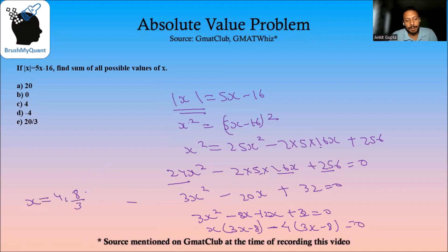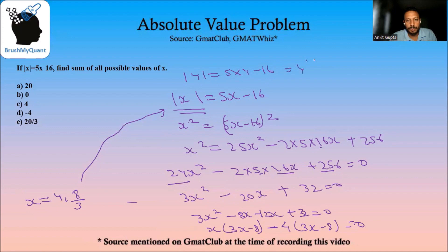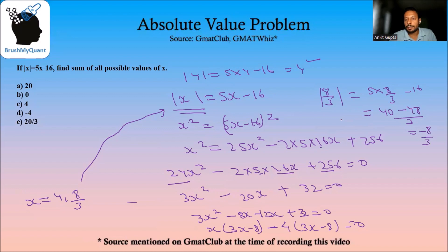The only second step in this method is we'll have to plug the values back into the equation and check whether they satisfy it or not. If we put x equal to 4, we'll have mod 4 is equal to 5 into 4 which is 20 minus 16, equal to 4. So this satisfies. If we put 8 by 3, mod of 8 by 3 is equal to 5 multiplied by 8 by 3 minus 16, giving 40 minus 48 by 3 which is minus 8 by 3. This is not true because mod of any number can never be negative. So the solution is only x equal to 4, and the answer is option C.